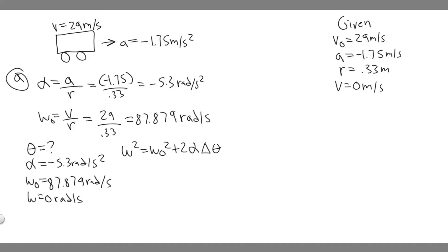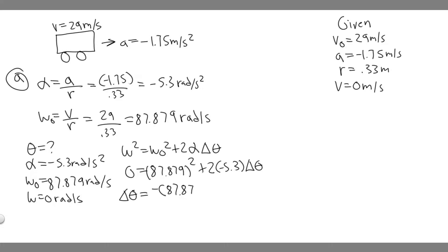Plugging in to solve for theta: 0 squared equals 87.879 squared plus 2 times (minus 5.3) times delta theta. Moving the omega₀ squared term to the other side and dividing by 2 times minus 5.3: delta theta equals minus 87.879 squared divided by (2 times minus 5.3). Plugging this into the calculator gives delta theta equals 728.558 radians.